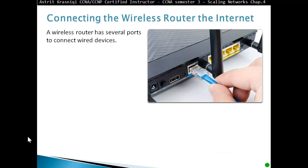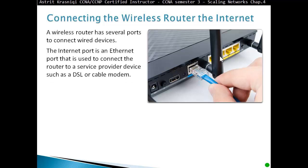A wireless router has several ports to connect wired devices. At the back there are typically four Ethernet ports for wired devices. The Internet port is the Ethernet port used to connect the router to a service-provided device, such as a DSL or cable modem.